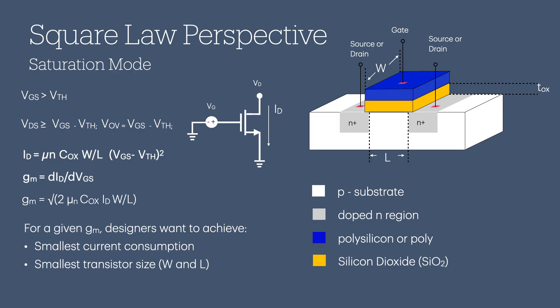Suppose you've chosen your GM. Now, as a designer, you want two things: to use as little current (ID) as possible, and to make the transistor as small as you can, both in width (W) and length (L). For length, it's straightforward - simply choose the minimum allowed by your process. But with width and current, you're limited. You can reduce W or lower ID, but you can't do both at once. The key point is, the product of W and ID must always remain constant.